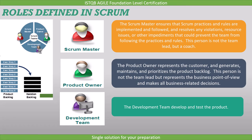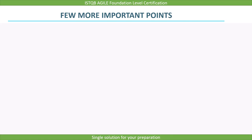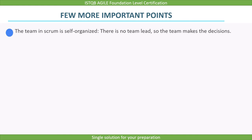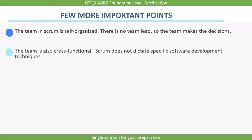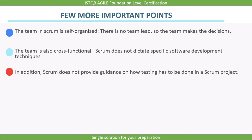Before we end this lecture, let's look at a few more important points. The team in Scrum is self-organized — there is no team lead, so the team makes the decisions. The team is also cross-functional. Scrum does not dictate specific software development techniques, and it does not provide guidance on how testing has to be done in a Scrum project. With this, we end the lecture here.